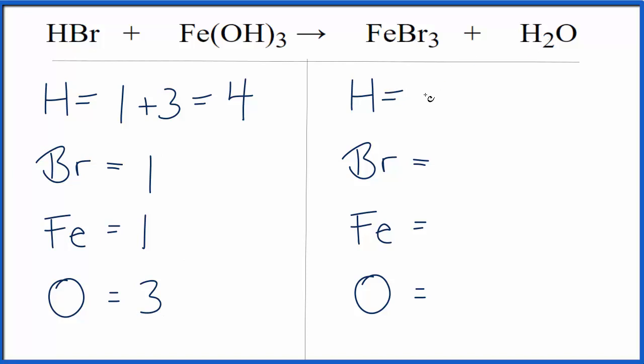Over on the product side, we have hydrogens, the two, bromines, three, iron, one, and an oxygen. We have one of those.